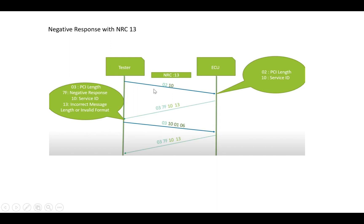For NRC 0x13 (incorrect message length or invalid format): if the PCI length says 0x02 but only one byte is sent — an incorrect length — the response is 0x03, 0x7F, 0x10, 0x13. Similarly, if the request is 0x03, 0x10, 0x01, 0x06 — where 0x06 is an extra byte beyond what is expected — the response is again 0x03, 0x7F, 0x10, 0x13, indicating incorrect length or invalid format.